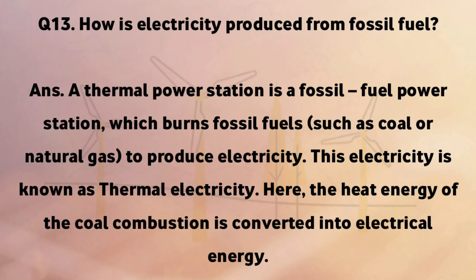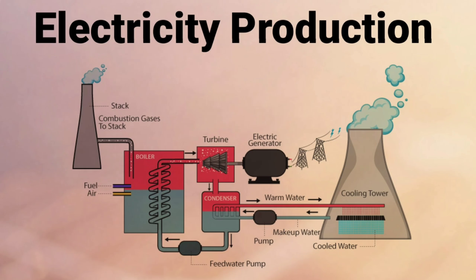How is electricity produced from fossil fuel? A thermal power station is a fossil fuel power station which burns fossil fuels such as coal or natural gas to produce electricity. This electricity is known as thermal electricity. Here, the heat energy of the coal combustion is converted into electrical energy.